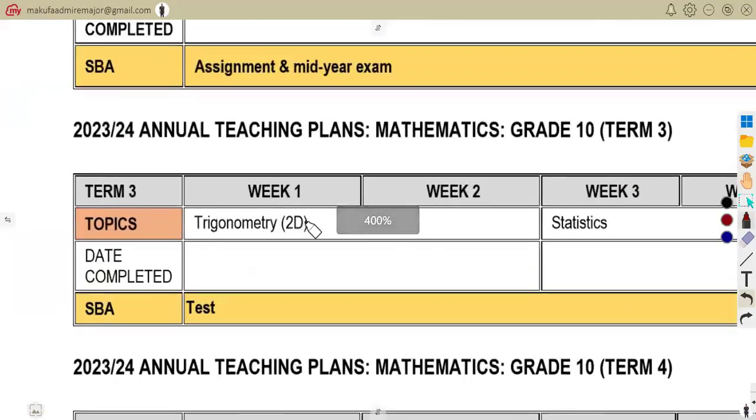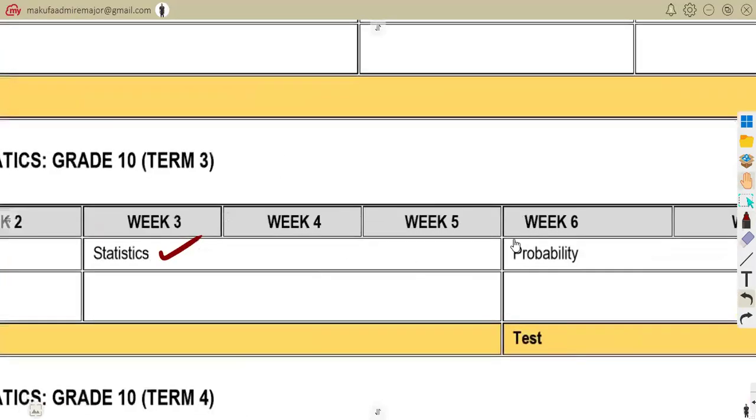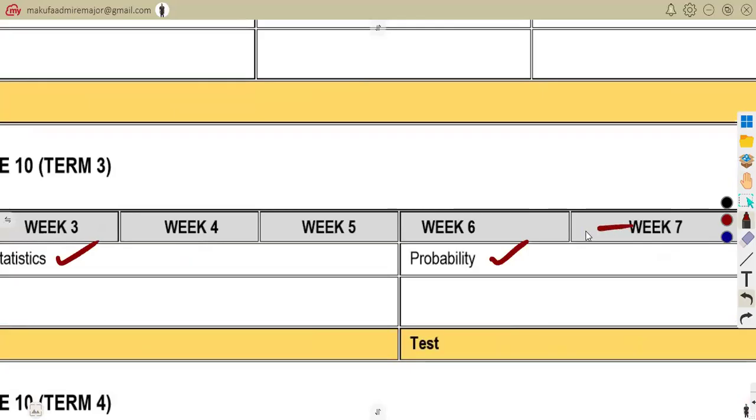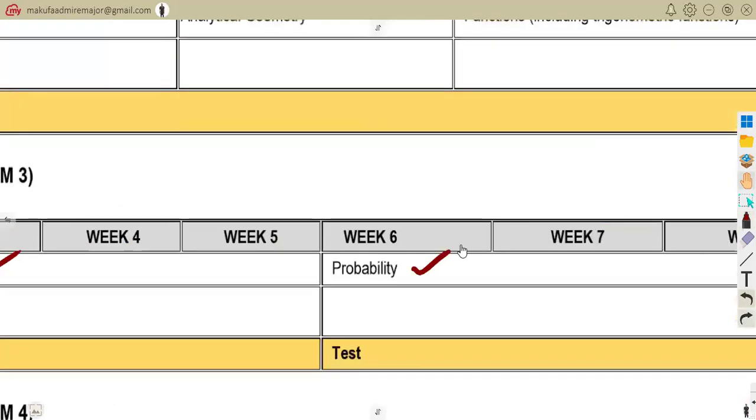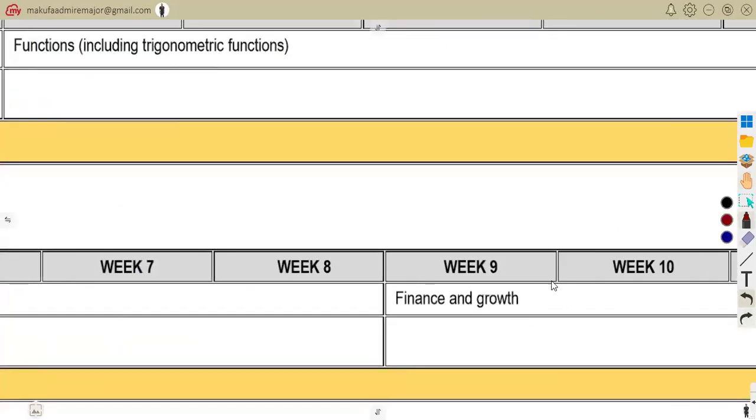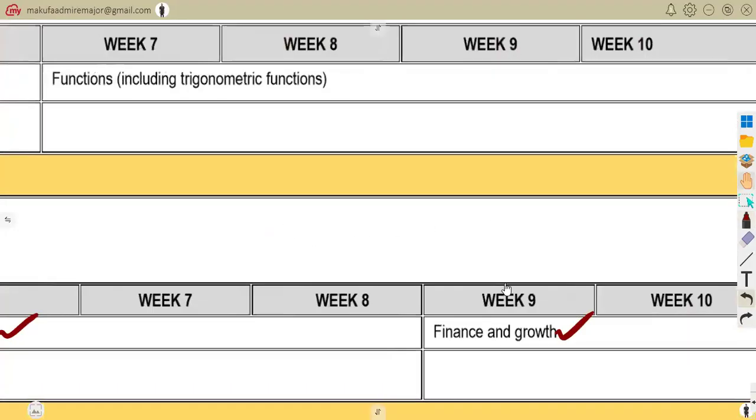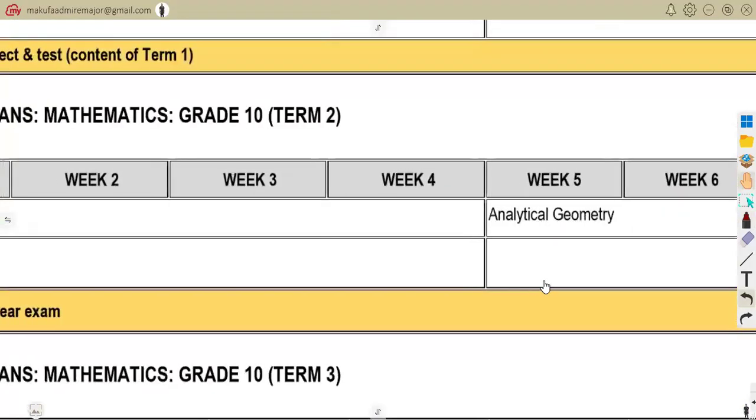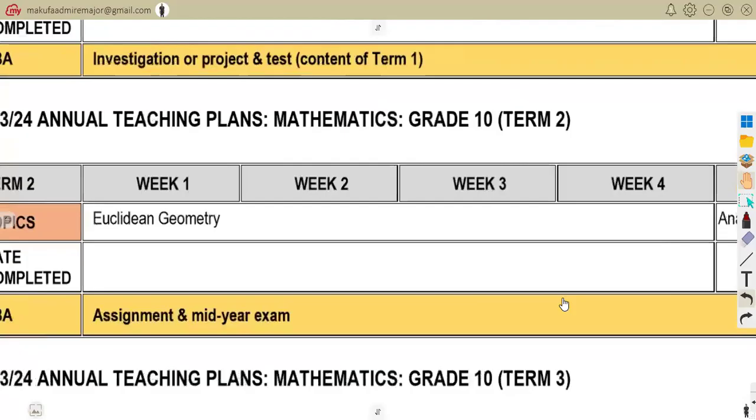Revise everything as you had back then in your term three. Revise all those: your trigonometry, your 2D, the statistics. Revise everything that you had before. Your probability, your finance and growth. Make sure that you revise. Refer back to your term two, revise what you had in your term two.